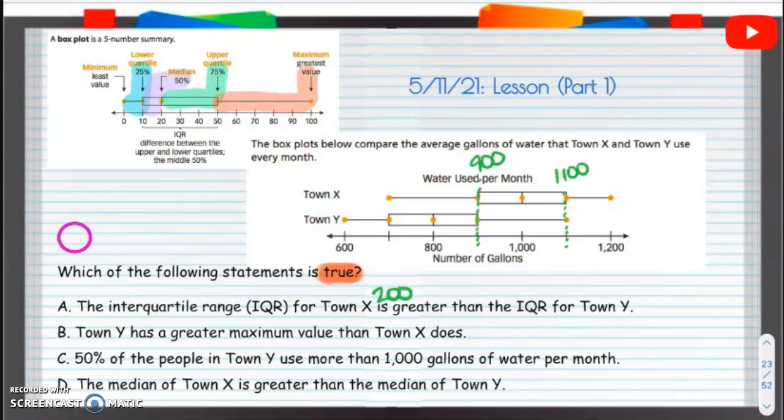Then we have 900 minus 500, and that will be 300, or I'm sorry, 400. So is town X, is 200 bigger than 400? No, 200 is not bigger than 400.